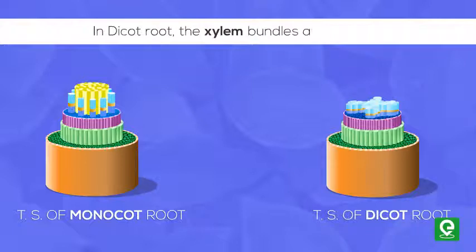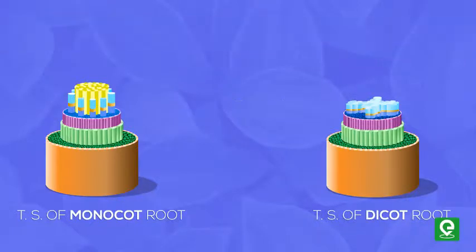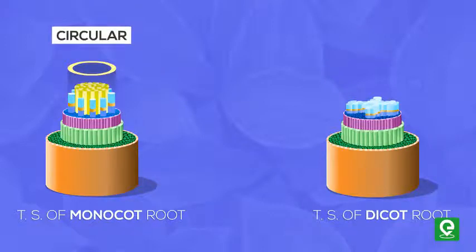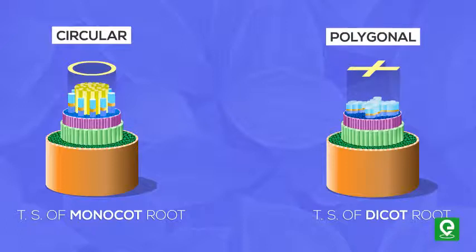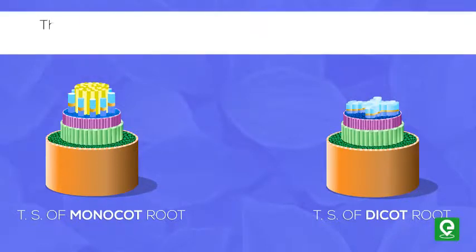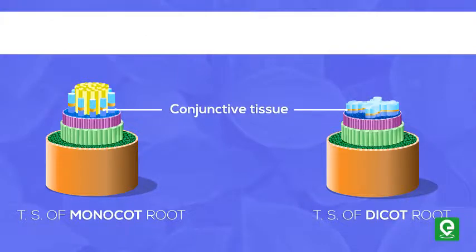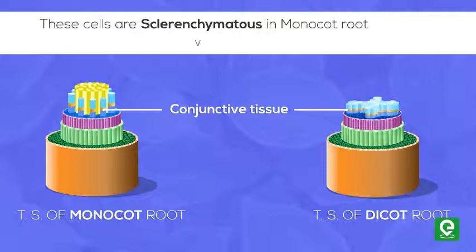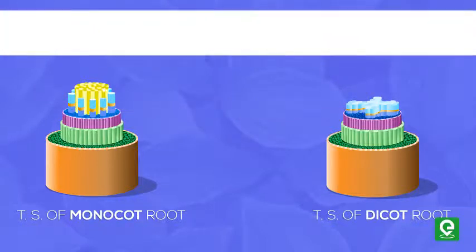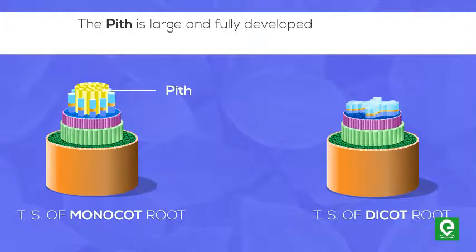In the cross-section of monocot roots, the metaxylem vessels appear circular, while in dicot roots the vessels appear polygonal. The cells that lie between xylem and phloem bundles are known as conjunctive tissues. These cells are sclerenchymatous in monocot root, while parenchymatous in dicot roots.